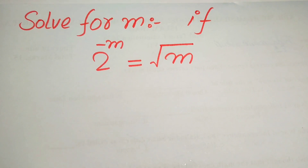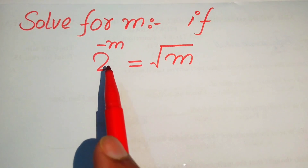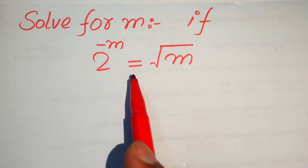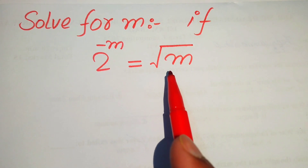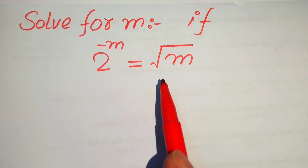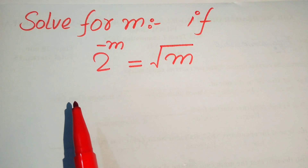Hello everyone, welcome. We solve this nice exponential equation problem where we have 2 to the power of minus m equals square root of m, and we solve for the values of m.